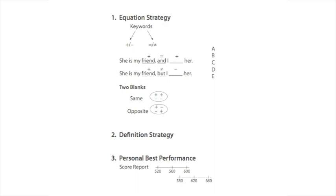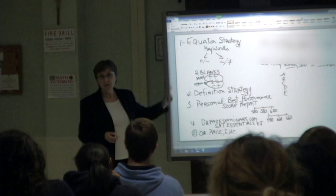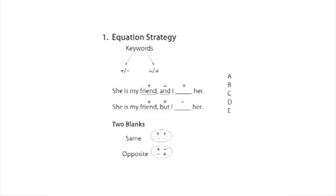They set these sentences up like mathematical equations that are provable in a court of law. The equation strategy is based on two key words. One of them is positive or negative, the other is an equal to or a shift word. Let's take a look and see how it works.